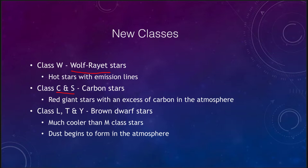We also see class C and S, which are the carbon stars. These are red giant stars that have excess carbon in their atmosphere. Later when we look at stellar evolution, we can see how carbon formed in the interior can be dredged up to the surface, enriching the surface in carbon more than we would normally see.